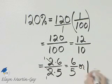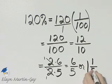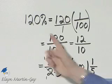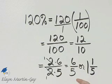5 divides into 6 one time with a remainder of 1, and that would be 1 over 5. So this percent written as a fraction is 6 fifths, written as a mixed number, it's 1 and 1 fifth.